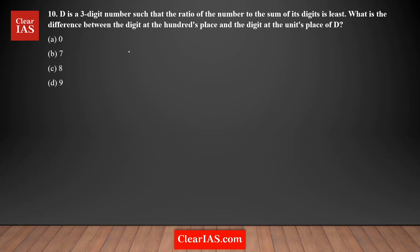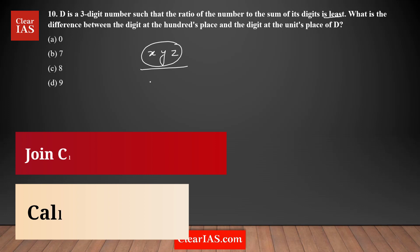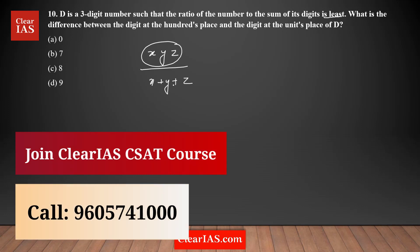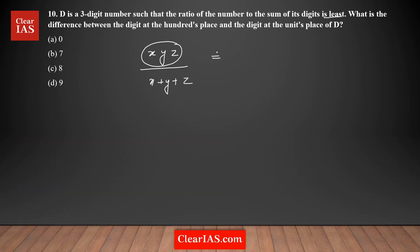We have a three-digit number such that the ratio of the number to the sum of its digits is least. So if the three-digit number has digits x, y, z, the ratio is xyz divided by x plus y plus z. This is the sum of the digits, and we need to minimize it.